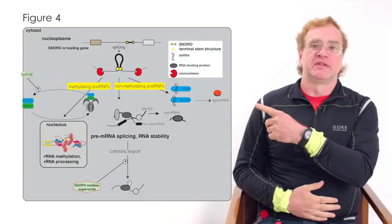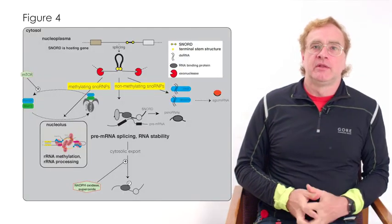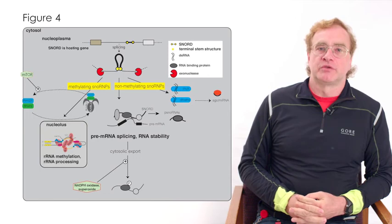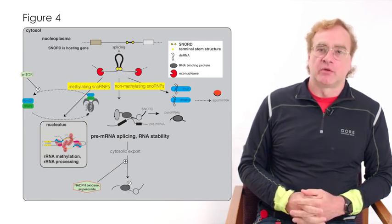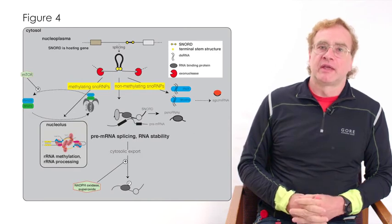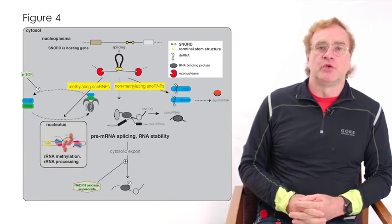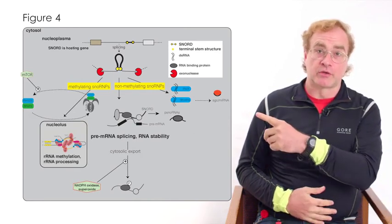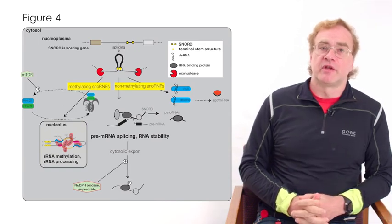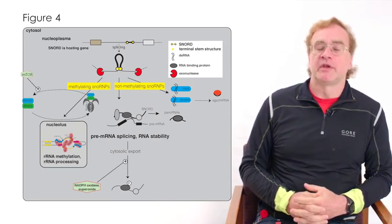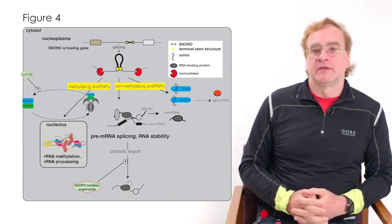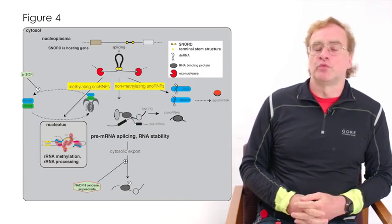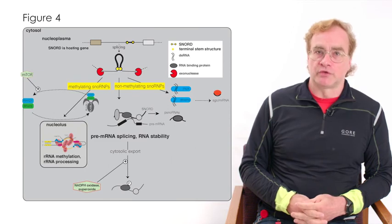The findings are summarized in this model here. In humans, most SNORD115 reside in introns, and they are released in the splicing reaction. Now, the fate of SNORD115 can be twofold. Number one, SNORD115 can form a methylating complex, and this methylating complex contains fibrillarin and it binds to ribosomal RNA in the nucleolus and performs 2'-O-methylation of ribosomal RNA.